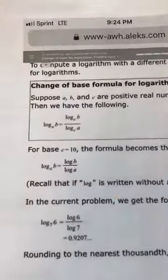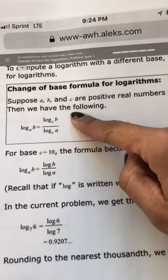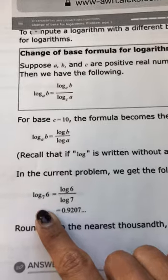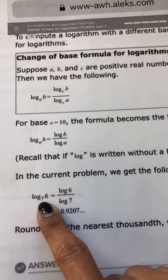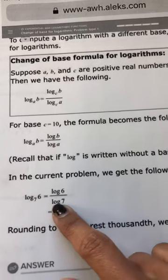So here we have a rule that log base a b could be rewritten as such. So here's an example. Log base 7 of 6 could be written as log 6 over log 7.